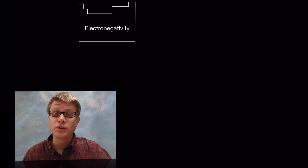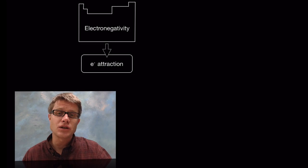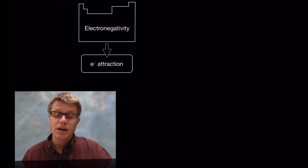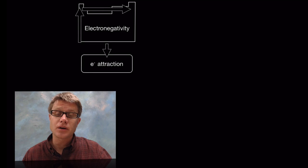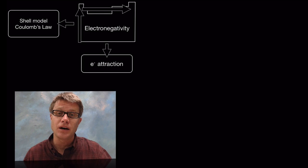When we start with covalent bonding, you really have to start by talking about electronegativity, which is how much an atom wants an electron. It's going to increase as we go up and across on the periodic table. The reason why is based on the Shell model and Coulomb's law.